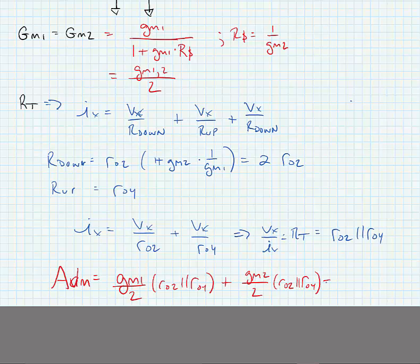And since these are equal, we can just say that it's equal to GM12 times R02 in parallel with R04.